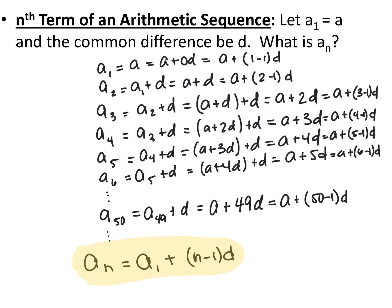Every once in a while you'll see this rewritten — they'll distribute everything out and write it in slope-intercept form — but the two versions are equivalent.